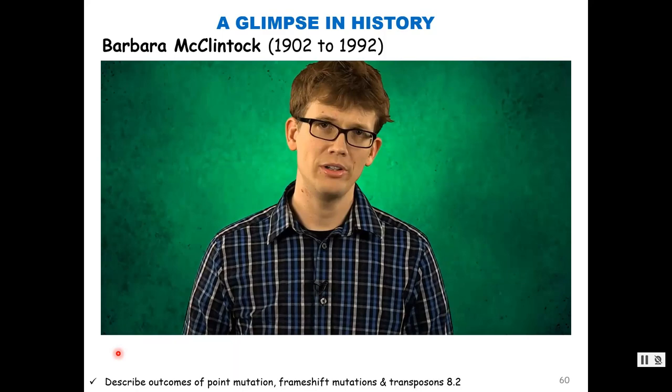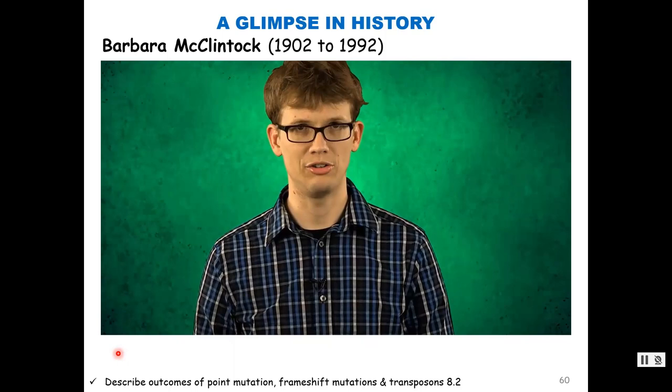In the 1940s, McClintock focused on the puzzling color patterns of Indian corn — why some kernels were white, brown, purple, or speckled. After breeding enormous numbers of maize plants over many generations, she realized sections of the plant's genome moved from one location to another, sometimes landing in the middle of a gene for color. In this way, McClintock discovered what we now call transposable elements, or jumping genes — stretches of DNA in nearly every organism that can move from one location to another, and one of the most important sources of genetic mutations, including in humans.